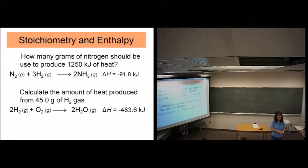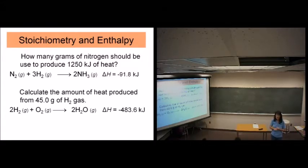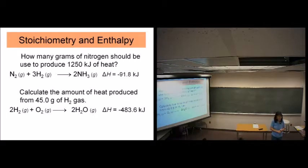There are three ways to determine enthalpy. One is calorimetry — you're going to do an experiment with that next week. Then we're going to use Hess's Law, that's another way. And the third way is heats of formation. So we're going to go through those three ways to find that number.